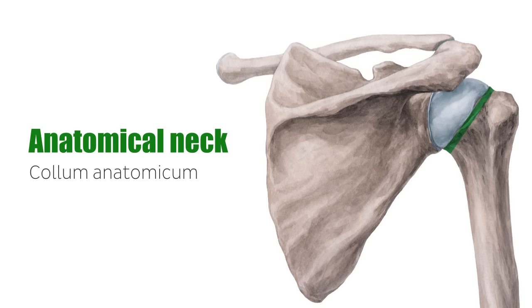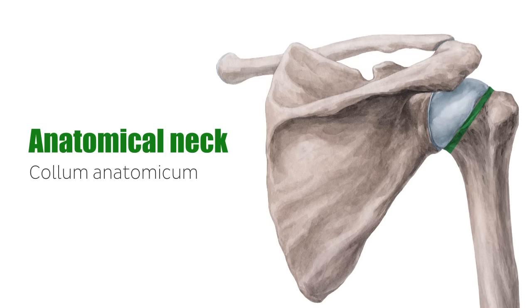The next structure that we find on the humerus is the anatomical neck, highlighted here in green. The anatomical neck is an area between the head and the greater and lesser tubercles of the humerus.